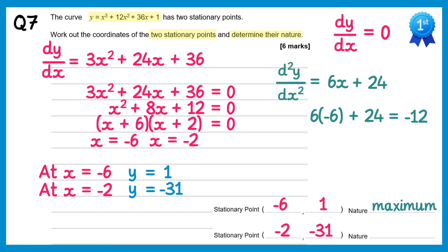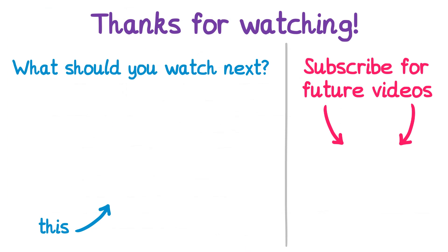At x equals negative 2: 6(−2) + 24 = −12 + 24 = positive 12. Since d²y/dx² is greater than 0, this stationary point is a minimum. Thank you for watching this video — I hope you found it useful. Check out what I think you should watch next and subscribe so you don't miss out on future videos.